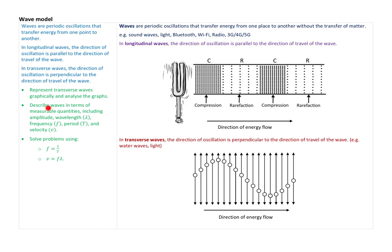To start out, as usual, we have the key concepts from the subject outline from the SACE board, and our success criteria here in green. These dot points represent all the things we need to be able to do. In this flip lesson, we'll learn how to represent transverse waves graphically and analyze the graphs, describe waves in terms of amplitude, wavelength, frequency, period, and velocity, and solve problems using the frequency-period equation and the wave equation relating velocity, frequency, and wavelength.